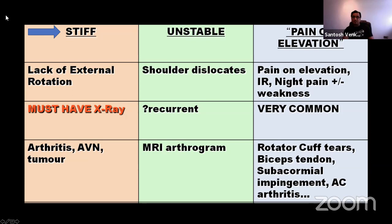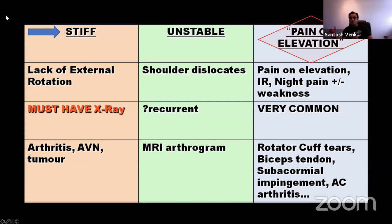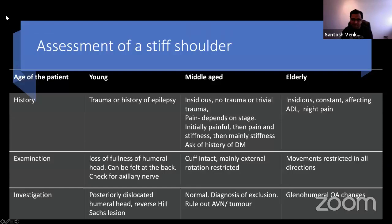Our focus is on a stiff shoulder — a patient who presents with restricted movements. The stiff shoulder could be related to a primary rotator cuff pathology or a secondary frozen shoulder. In those situations it may be difficult to establish whether the cuff is intact, whether there's subacromial impingement, or whether there is ACJ arthritis, because in a stiff shoulder the range of movements needed to confidently assess rotator cuff pathology simply isn't there.